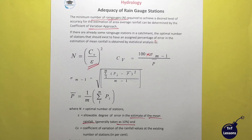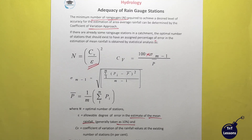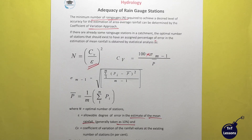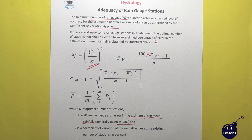The higher the level of accuracy, the higher would be the gauge number. So if you require the highest accuracy, you will need a higher number of gauges, because in a particular area, more gauges mean higher accuracy. Let's get started with the formula. In the next video, we will upload an example.